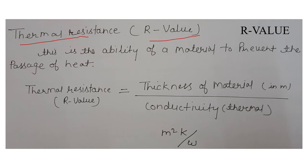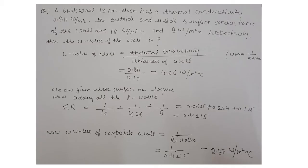This was the thermal resistance R value. Now, through an example, we will understand how to calculate U value and R value in a building and for numerical problems. The question: a brick wall 19 cm thick has a thermal conductivity of 0.811 watts per meter degree centigrade. The outside and inside surface conductances of the wall are given, and we have to find the U value of the wall. The surface conductance values given are 16 and 8 watts per square meter degree centigrade.